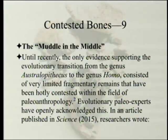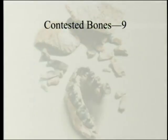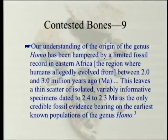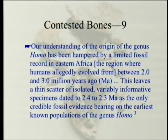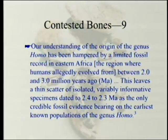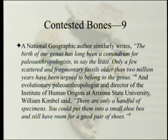Evolutionary paleo experts have openly acknowledged this in an article published in Science in 2015. Researchers wrote: 'Our understanding of the origin of the genus Homo has been hampered by a limited fossil record in eastern Africa — the region where humans allegedly evolved — between 2.0 and 3.0 million years ago.' This leaves a thin scatter of isolated, variably informative specimens dated 2.4 to 2.3 million years ago as the only credible fossil evidence bearing on the earliest known populations of the genus Homo.